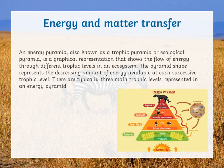Moving to another concept, which is the energy pyramid — also known as a trophic pyramid or ecological pyramid — it is a graphical representation that shows the flow of energy through different trophic levels in an ecosystem. The pyramid shape represents the decreasing amount of energy available at each successive trophic level.